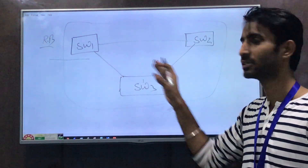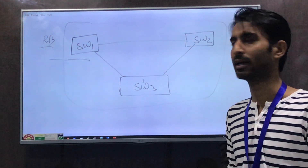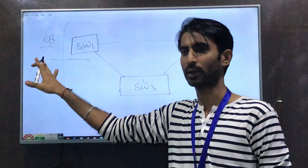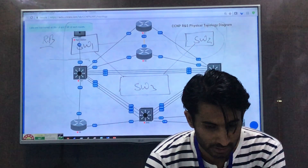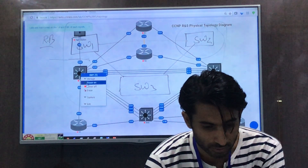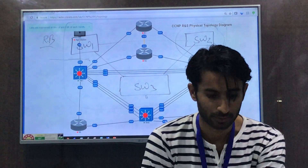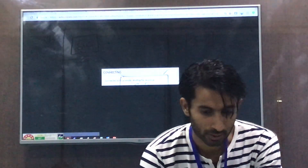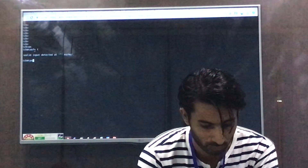For now we don't know the bridge IDs, so we will check what they are and see which switch becomes the root bridge. Then we will manipulate the priority and make a different switch the root bridge instead of the default chosen one. Let's go to the lab. I am going to start Switch 1, Switch 2, and Switch 3, take the console of each, and first set the hostnames so we can remember which is which.